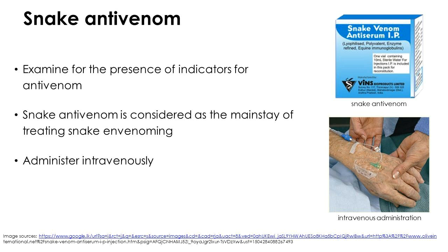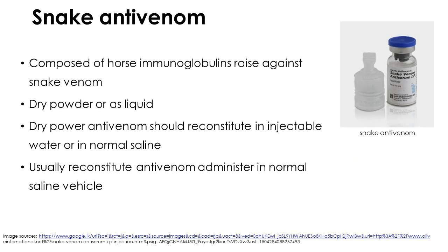Early detection of envenomation is critical to give antivenom and prevent reversible toxic effects. Therefore, history taking, examination, and investigation should be mainly focused on detecting any indications for the administration of antivenom, as it is the mainstay of treating snake envenomation. Usually, snake antivenom is administered intravenously with close monitoring.